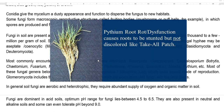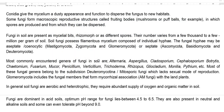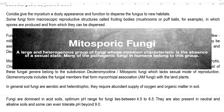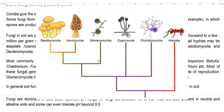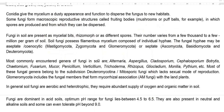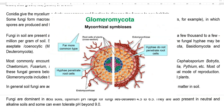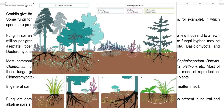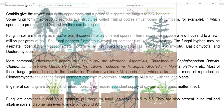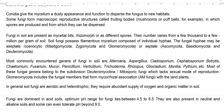Pythium is the one that causes root rot in plants. Most of these fungal genera belong to the subdivision Deuteromycotina or mitosporic fungi, which lack a sexual mode of reproduction. Another important fungal group associated with the soil is Glomeromycota, mainly composed of fungal members associated with plants as mycorrhiza — specifically arbuscular mycorrhiza — benefiting many land plants.